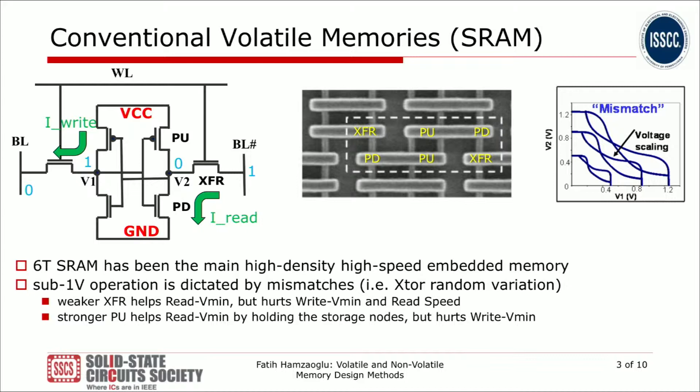Another beauty of SRAM is it works below one volt, but due to random mismatches there is a certain VCC min of operation. Designers typically optimize the sizings of the SRAM transistors to optimize read margin or write margin, but typically improving one hurts the other. A weaker transfer gate helps read margin but hurts write margin and read speed; a stronger pull-up helps read margin but hurts write margin.